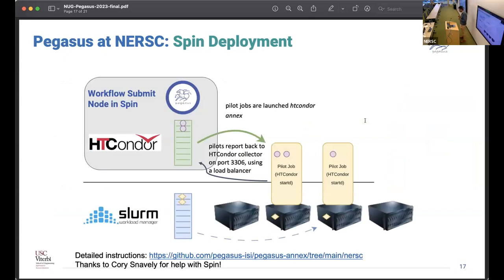I'll just give a quick overview of what happens. In the SPIN cluster, you spin up a workflow submit node. And then what we are using is we are launching from the workflow submit nodes, we launch pilot jobs against Perlmutter. And that ends up spinning up a Condor pool on the fly. The pilots report back to HT Condor collector daemon, which is running in your container. And we use a load balancer to connect the ports. This is just done automatically during your SPIN cluster setup time. We have detailed instructions in the GitHub README. And once this whole setup is set up, you can just submit your workflows against the pilot jobs that are running on Perlmutter. I wanted to give a shout out to Corey, who helped me get my head around the SPIN concepts when I was exploring how to do the setup.